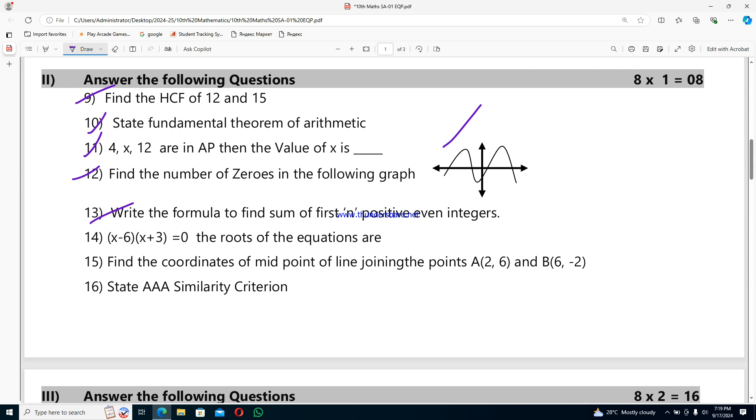Question 13: write the formula to find sum of first n positive even integers. Question 14: (x-6)(x+3)=0. The roots of the equation are. Question 15: find the coordinates of midpoint of line joining points A(2,6) and B(6,-2). Question 16: state AAA similarity criterion.